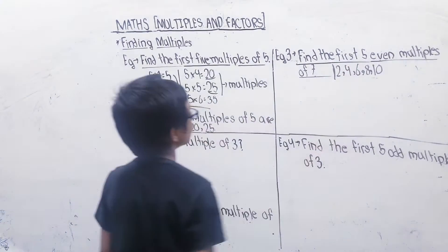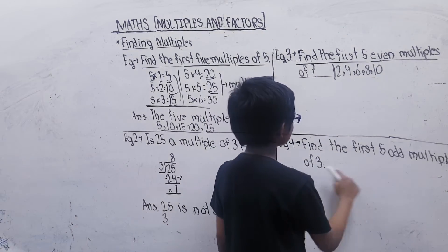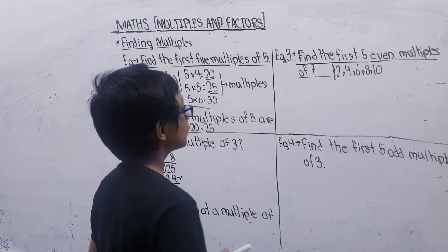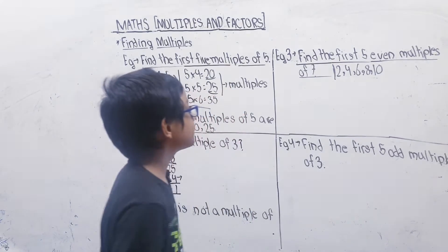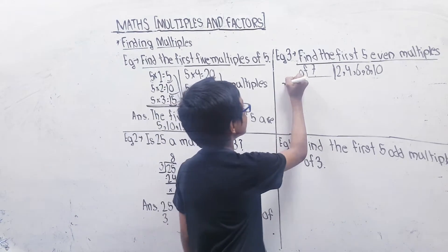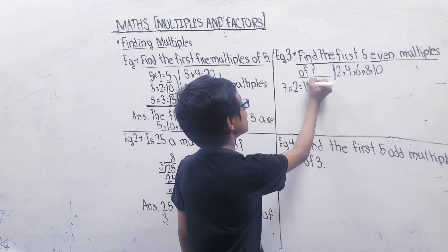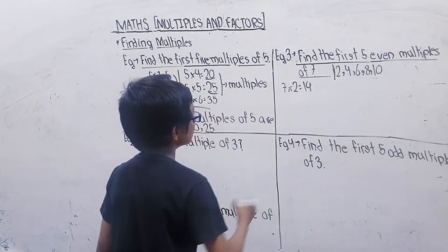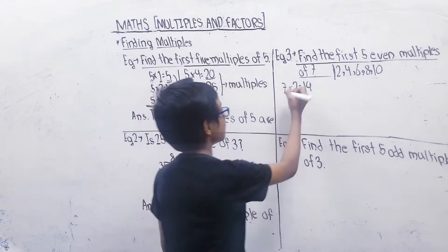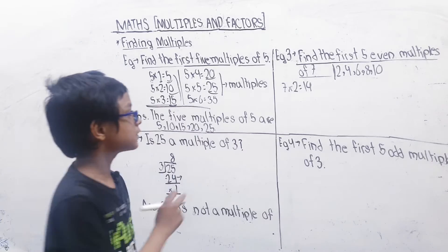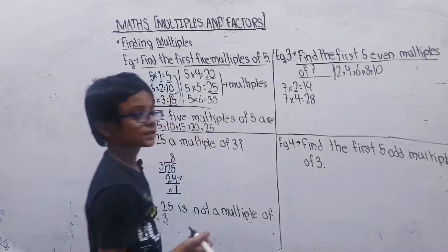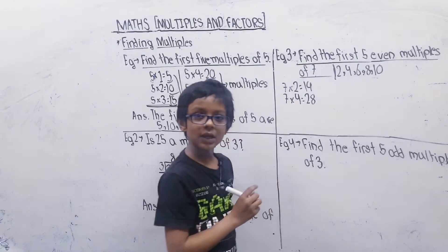So we have to do five even multiples of 7. 7×2 is 14, 14 is an even number. 7×3 is 21, 7×4 is 28, 7×5 is 35, 7×6 is 42.